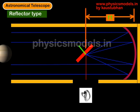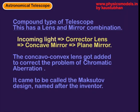In this reflector type telescope there are no lenses. The third type of telescope is a compound type. It has a combination of lenses and mirrors. The incoming light goes through a corrector lens, then goes to a concave mirror, thereafter to a plane mirror, and then to our eyes.